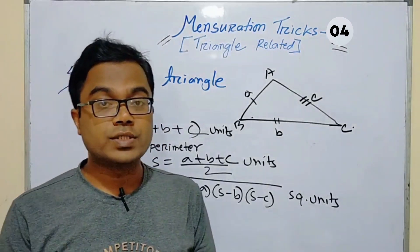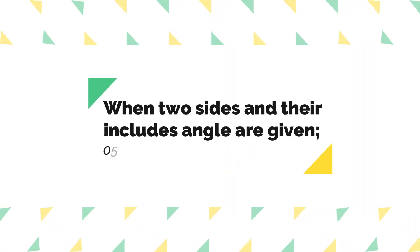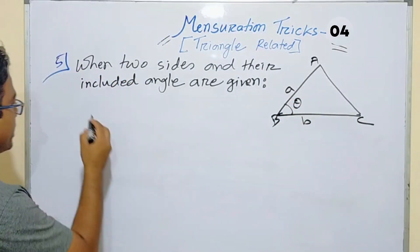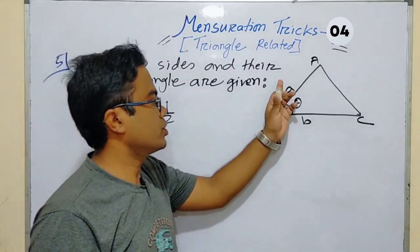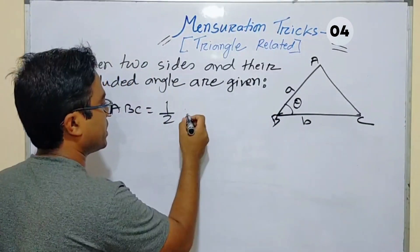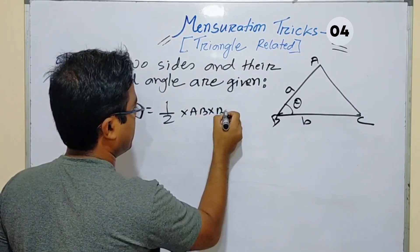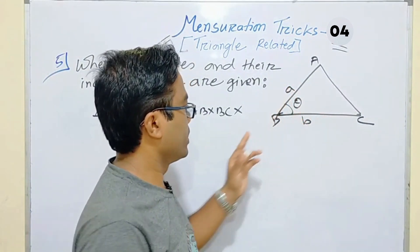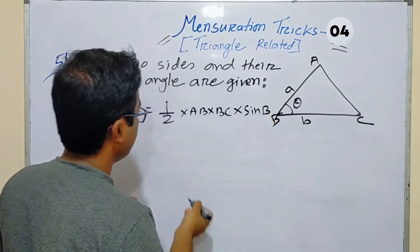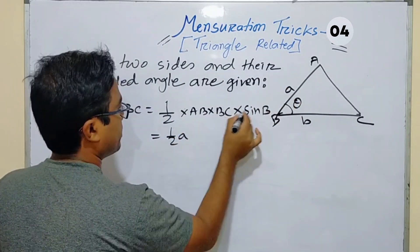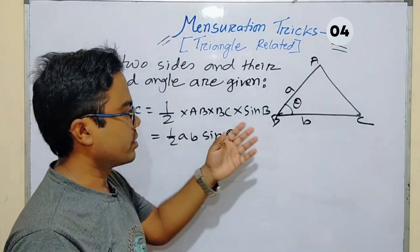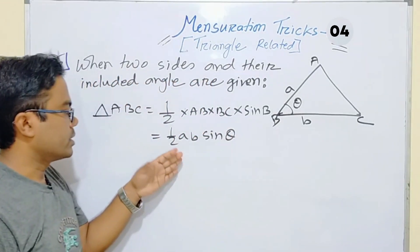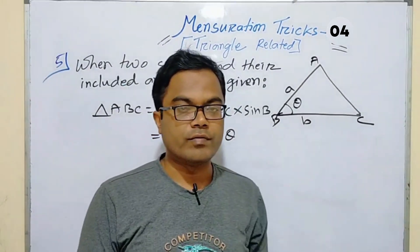When two sides and their included angle are given, the area of triangle ABC equals half of the product of the two sides into the sine of the included angle. That is, area equals half of AB times BC times sine of angle B. You can also write this as half of a times b times sine theta. You can apply this formula easily.